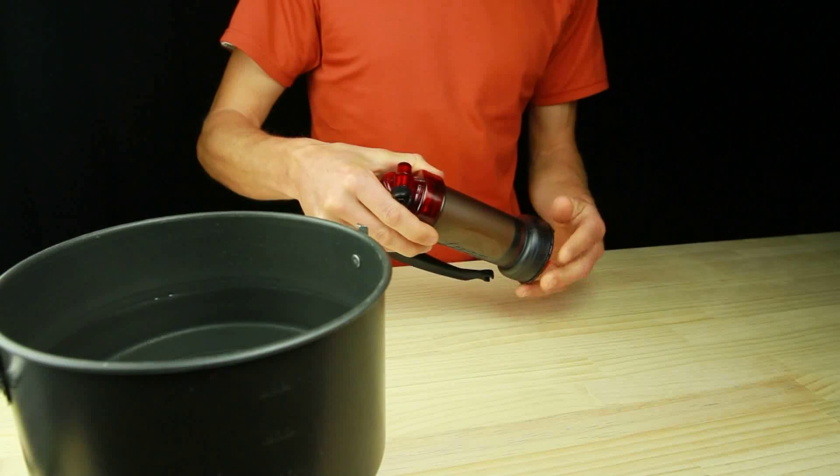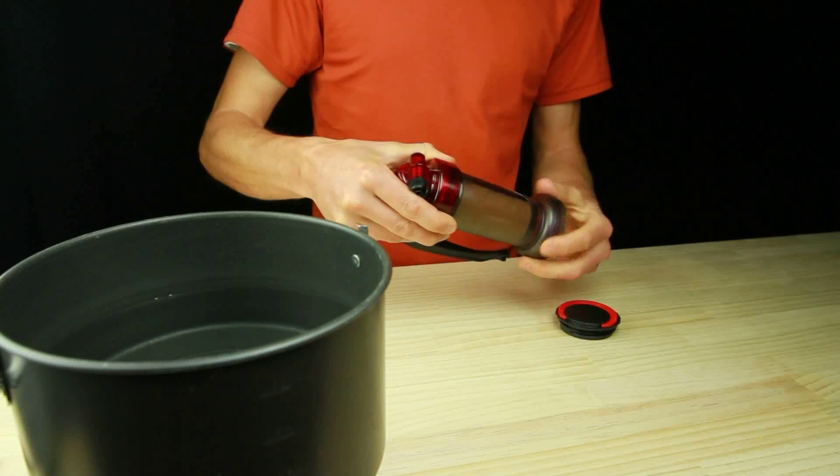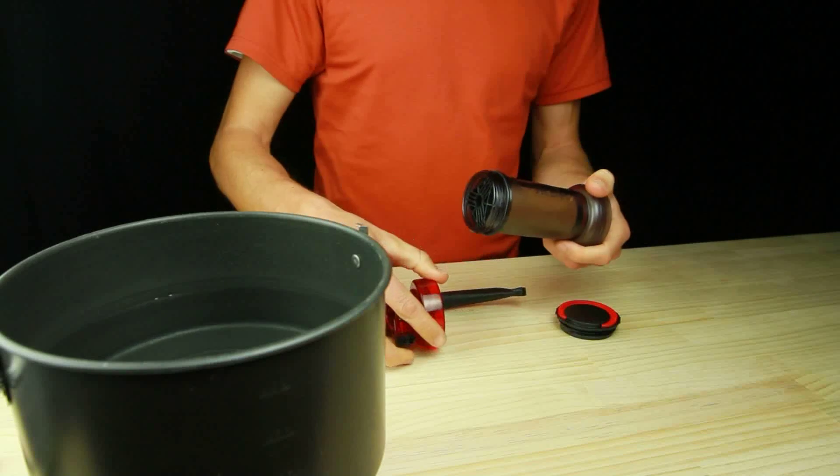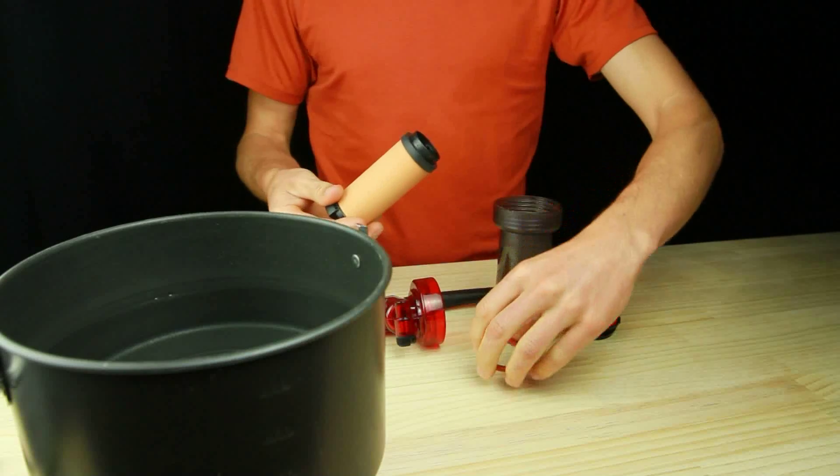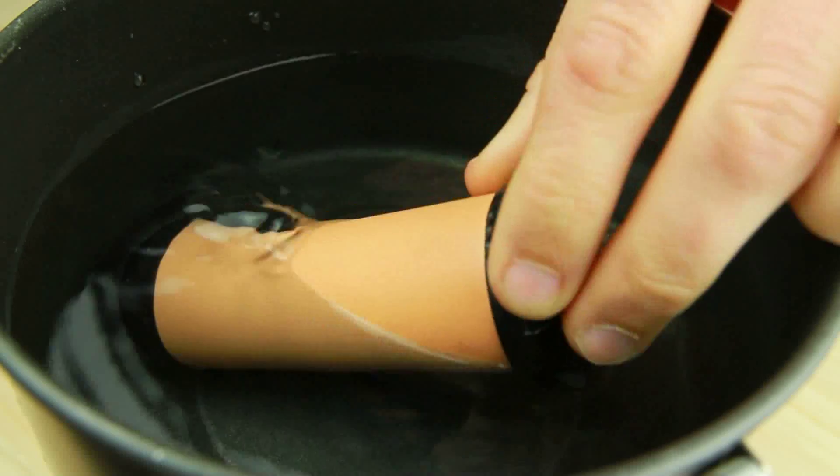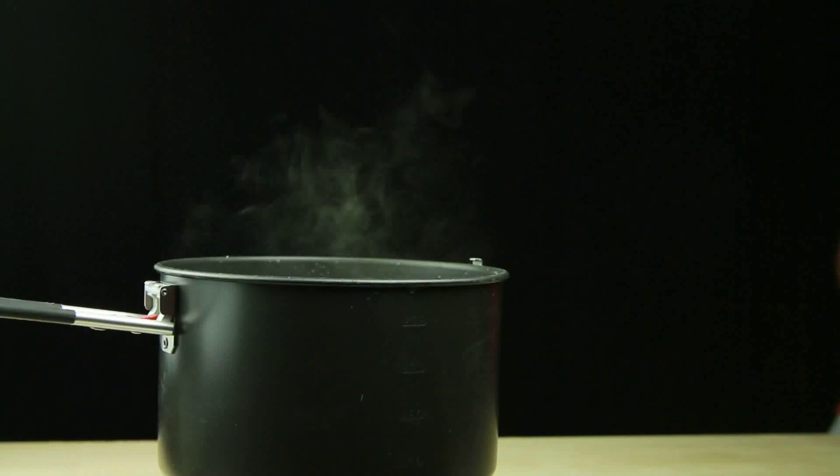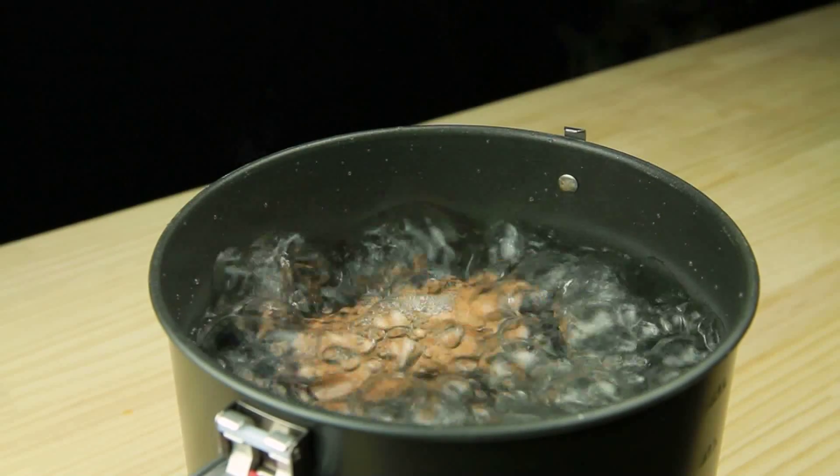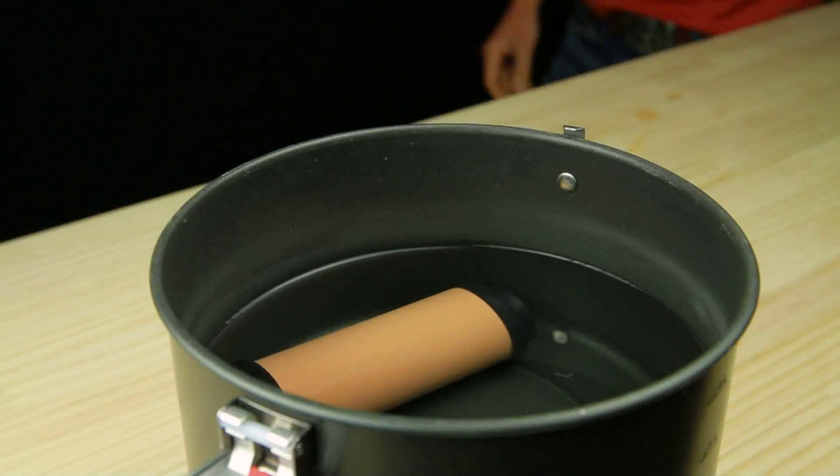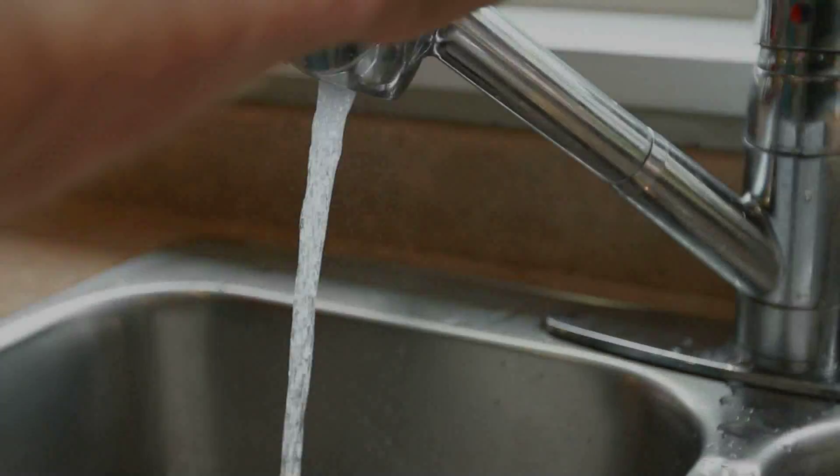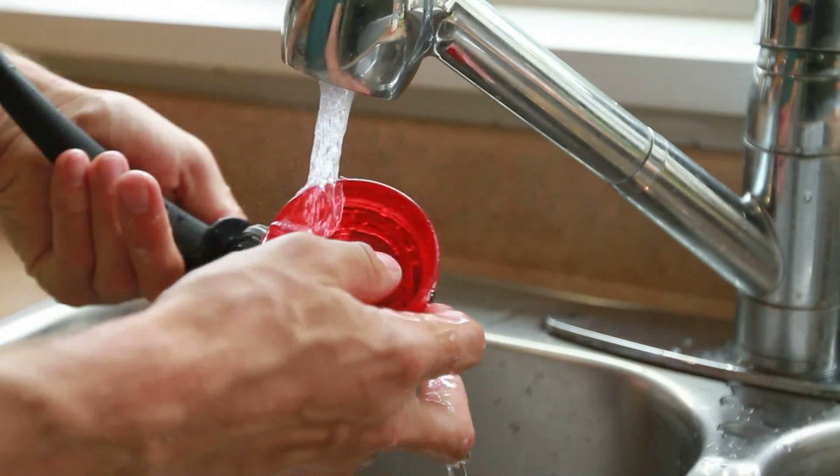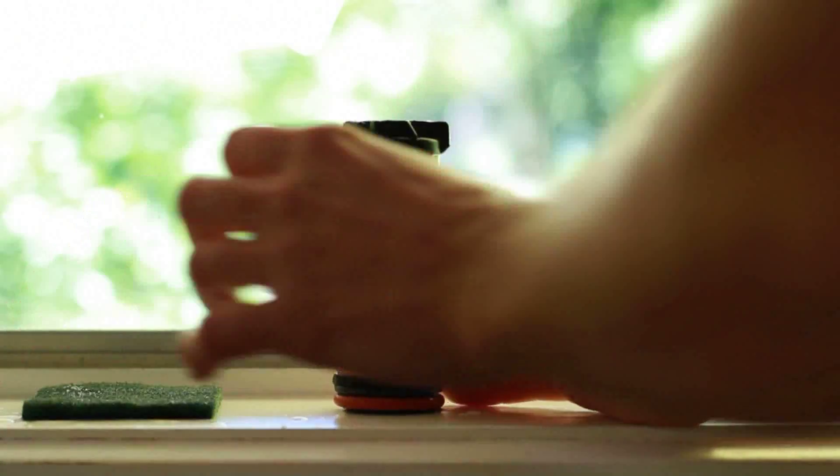If the MiniWorks EX microfilter has been used for more than a week straight or is going into or coming out of long term storage, then the ceramic element should be sterilized. Remove the ceramic element and take off the lower end cap O-ring. Place the ceramic element into a large pot of room temperature water. Bring the water to a boil and maintain the boil for 5 minutes. Turn off the stove and allow the water to cool down before removing the ceramic element. Thoroughly wash and completely dry all of the filter parts. Air dry the ceramic element for 3-5 days before reassembling the filter for storage.